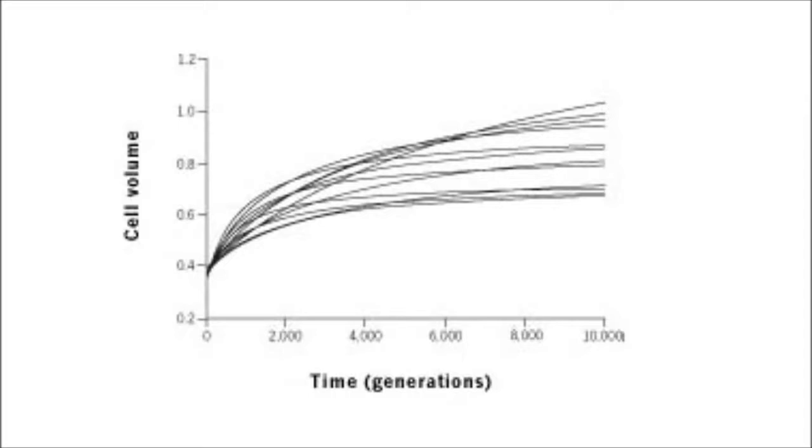The curve that reaches the highest value at generation 10,000 starts by growing more slowly than some of the others, and then overtakes them before generation 7,000.